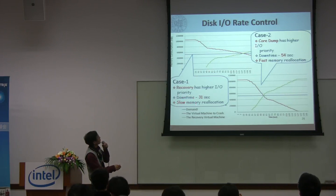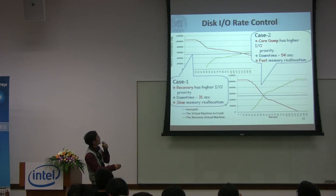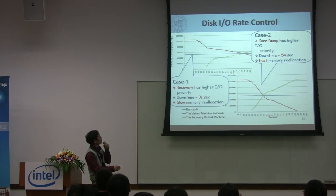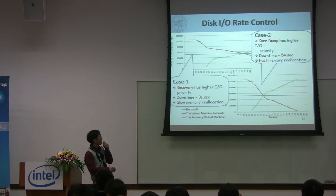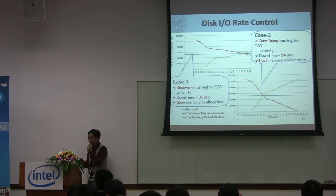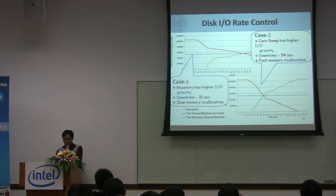For the second case, if the crash VM has higher CPU priority, the downtime increases from 31 to 54 seconds. In this case, there is faster memory replication.